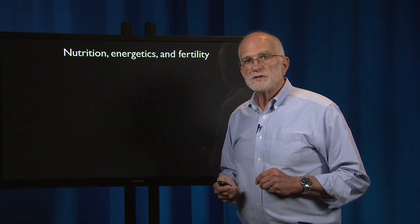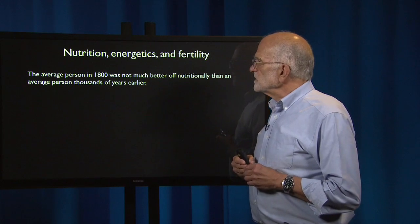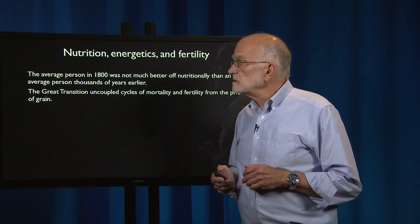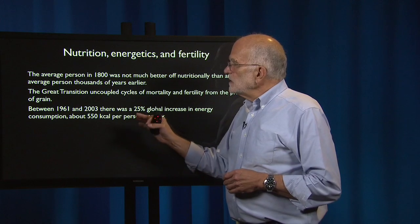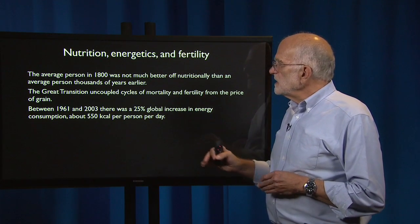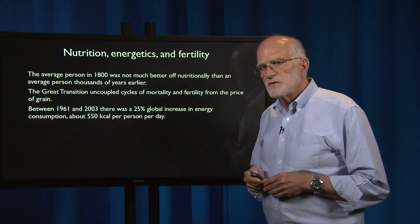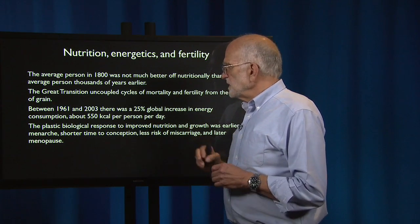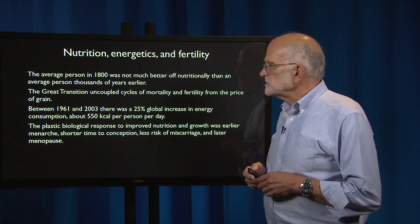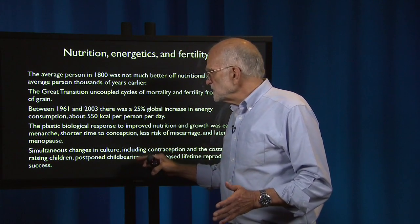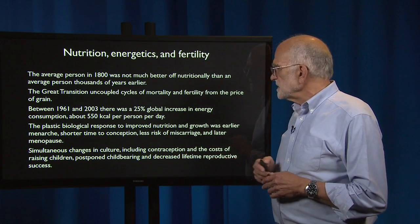There are also impacts on nutrition, energetics, and fertility. The average person in 1800 was not much better off nutritionally than an average person thousands of years earlier. The Great Transition uncoupled cycles of mortality and fertility from the price of grain. Between 1961 and 2003, there was a 25% global increase in energy consumption — about 550 kilocalories per person per day. The plastic biological response to improved nutrition was earlier menarche, shorter time to conception, less risk of miscarriage, and later menopause. Simultaneous cultural changes, including contraception and the cost of raising children, postponed childbearing and decreased lifetime reproductive success.